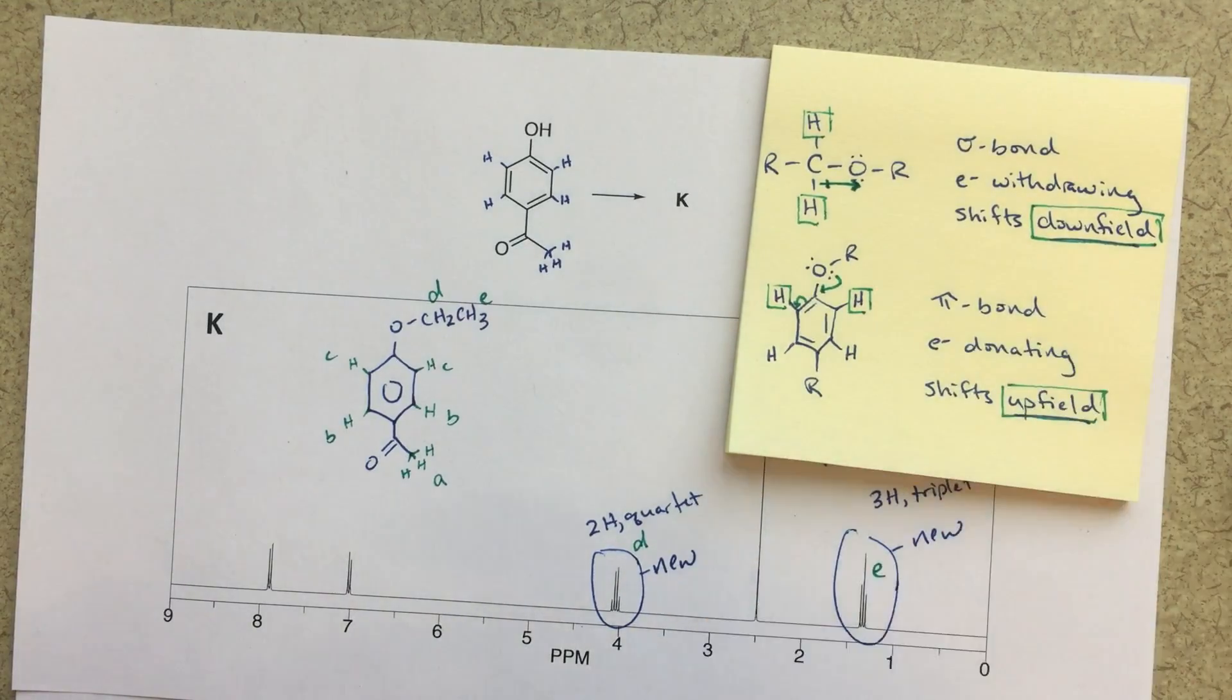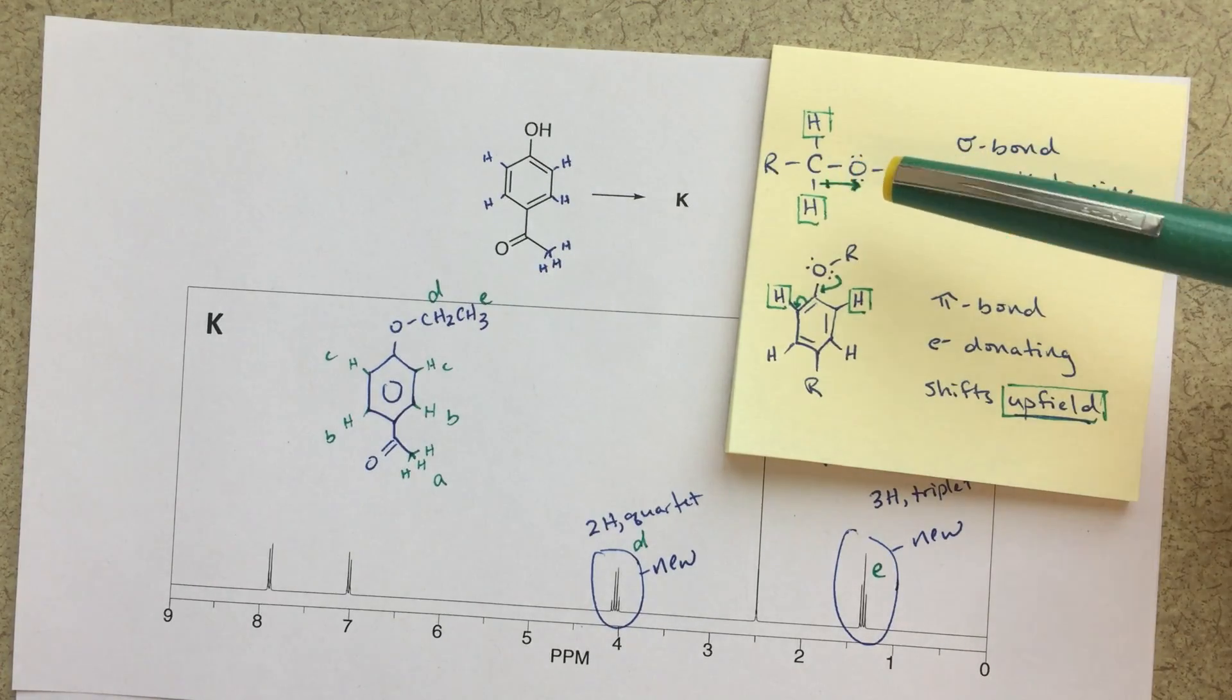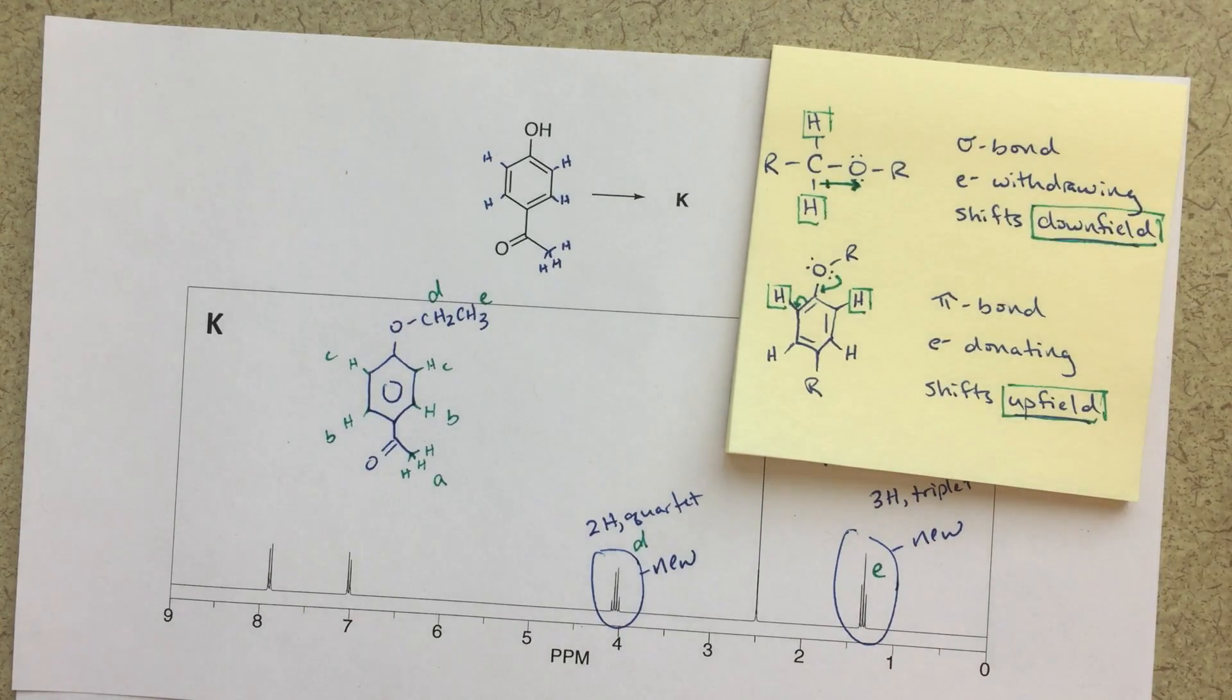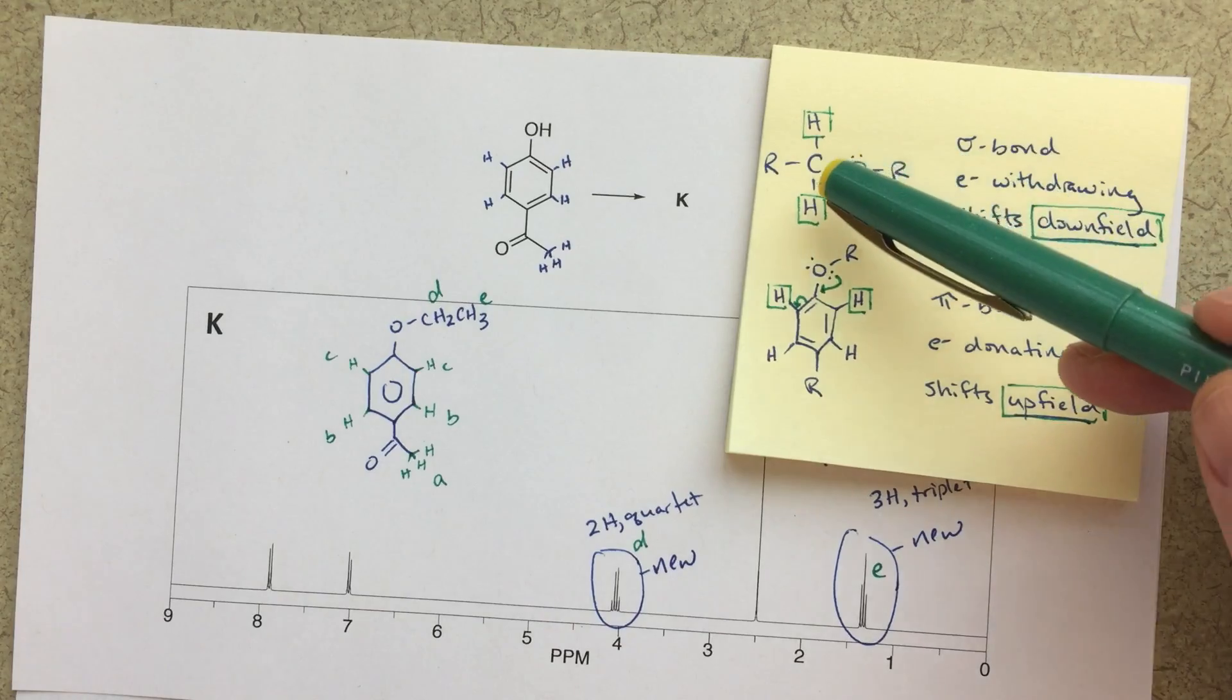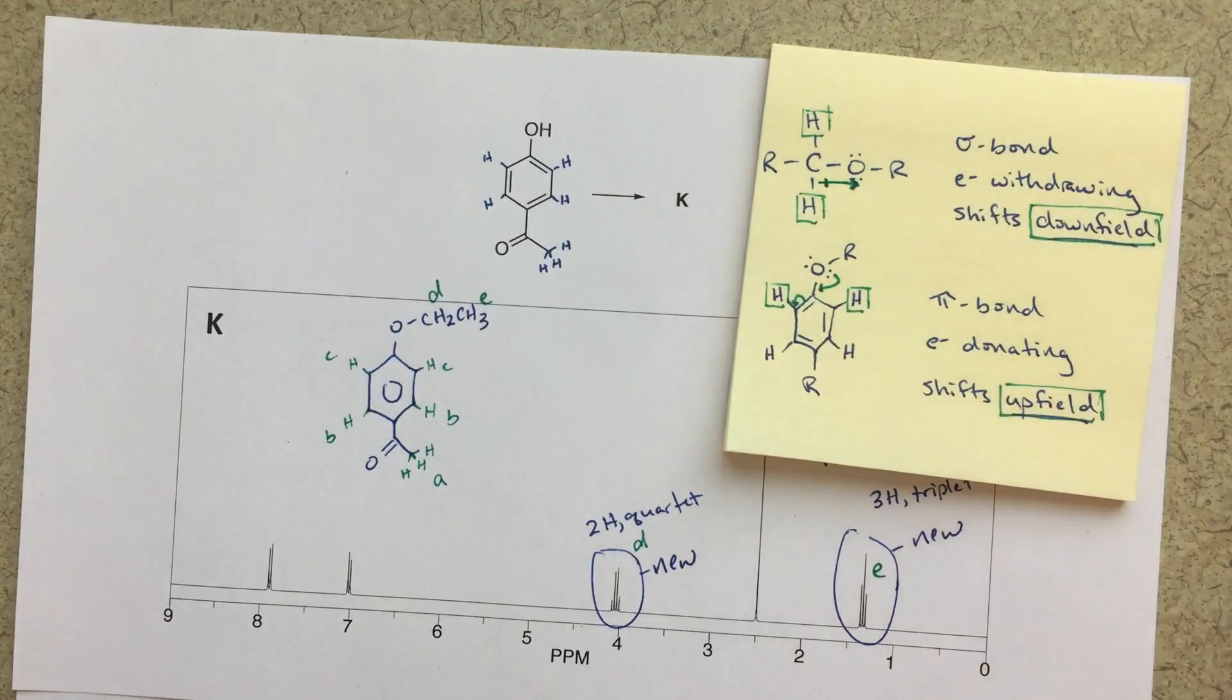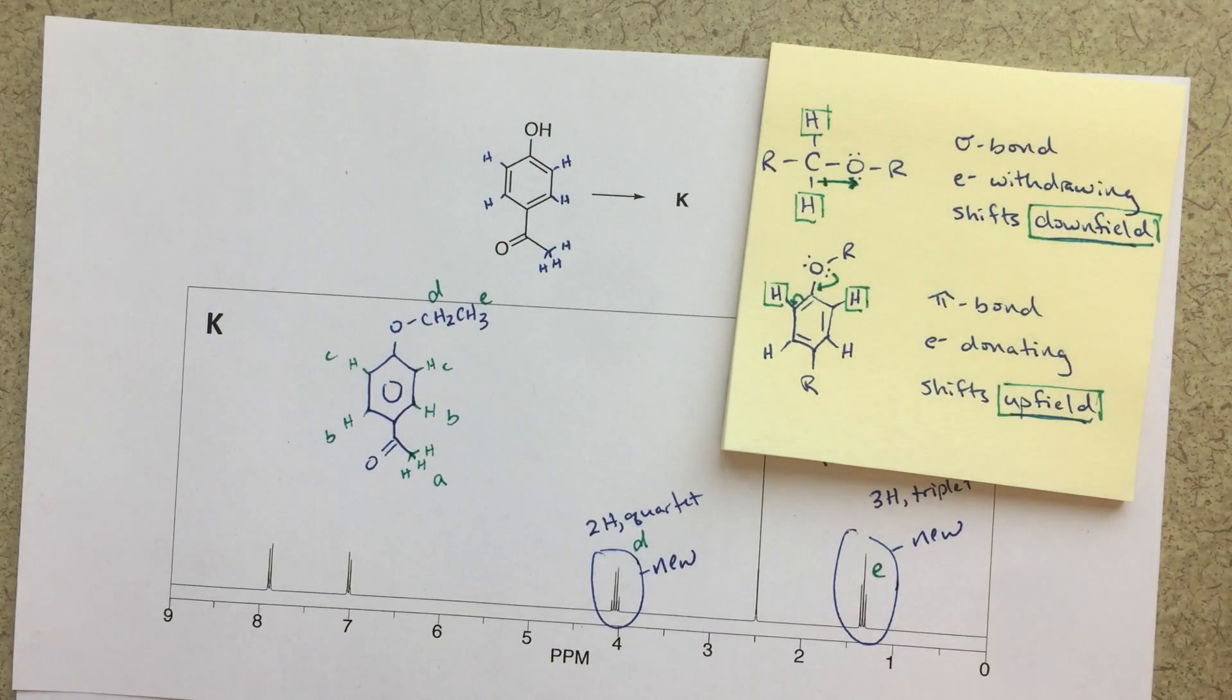If we look at this sticky note, under most common cases when we see a sigma bonded carbon oxygen, this is going to just be an electron withdrawing group. It's going to pull electron density away because this is going to be a polar bond and it's going to shift these green protons downfield. We're pulling that electron density away, we're deshielding them, they're going to shift downfield. But when this oxygen is bonded to a pi bonded carbon we're going to get an actual electron donating effect due to resonance. It's always the answer is always resonance, right?